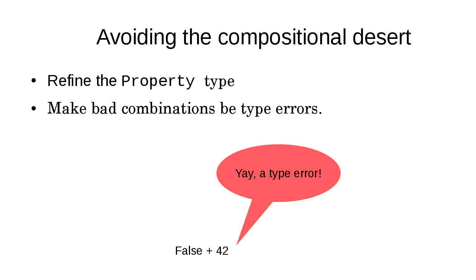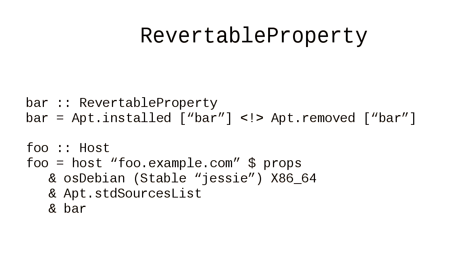We'd like to avoid that compositional desert. The way I want to do it is to make bad combinations of properties be a type error. A type error is a good thing — it means I have prevented you from shooting yourself in the foot. And when shooting yourself in the foot means your mail server doesn't work at 3am, that is a good thing.